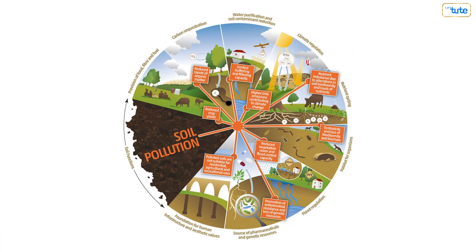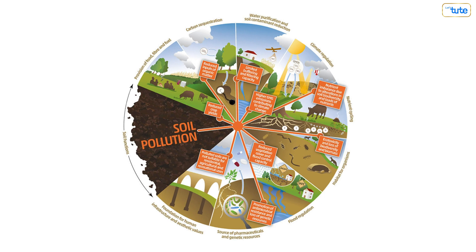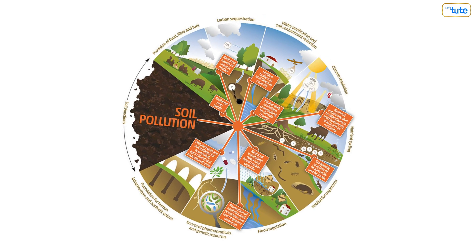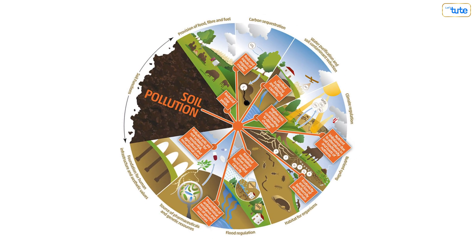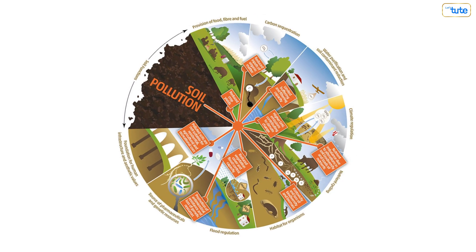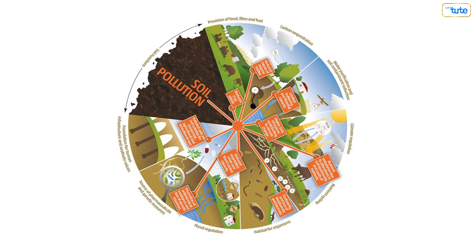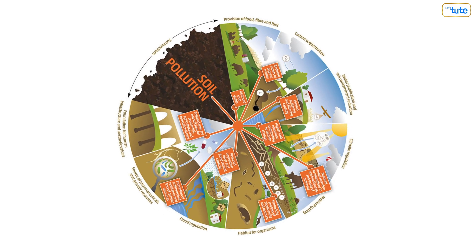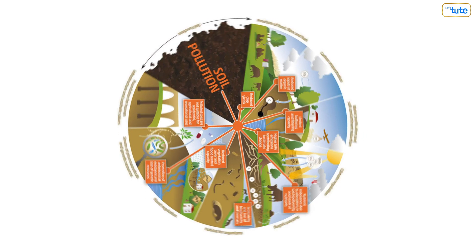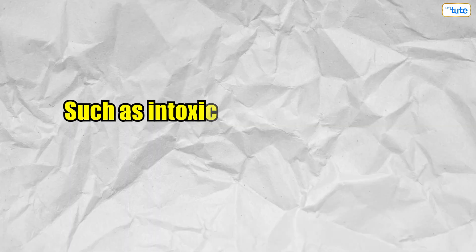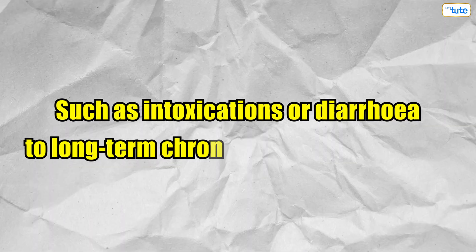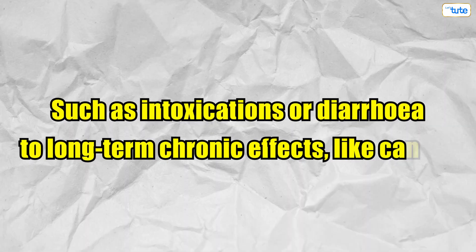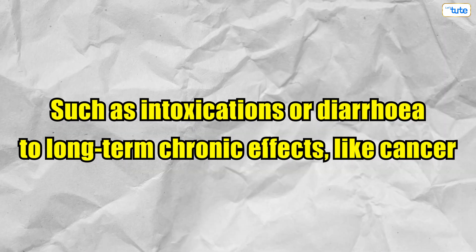Pollutants in soil, groundwater, and in the food chain can cause a variety of diseases and excess mortality in humans — from short-term acute effects such as intoxications or diarrhea, to long-term chronic effects like cancer.